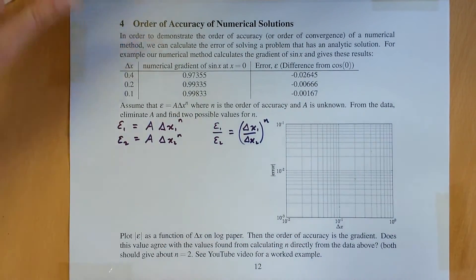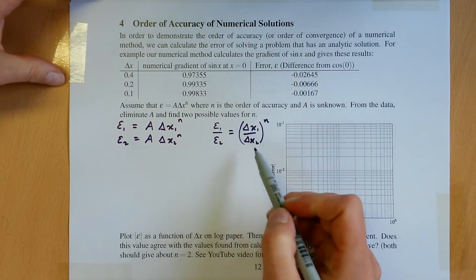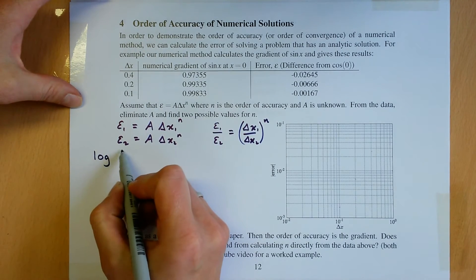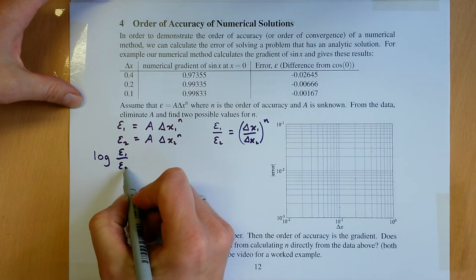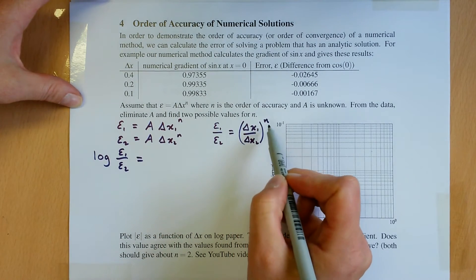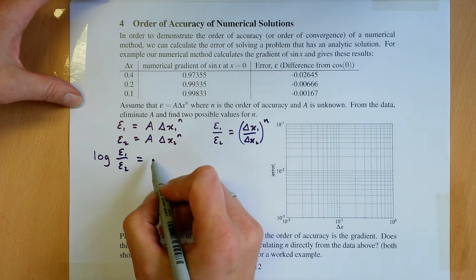Now to find n, we can take the logarithm of both sides, it doesn't matter what kind of logarithm. Log of epsilon 1 over epsilon 2 is equal to—now as I take the log of this side, I'm going to take that power there and put it outside the log—n times log of delta x1 over delta x2.